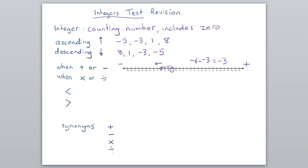If we're multiplying or dividing, the trick there is to just work out the answer, ignoring all the positives and negatives. And if there's an odd number of negatives, then the answer is going to be negative.